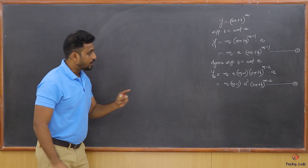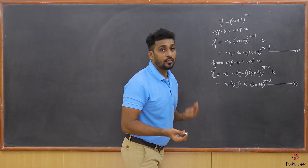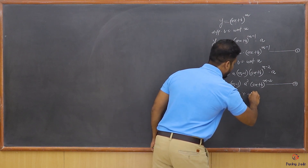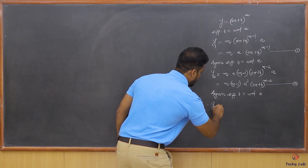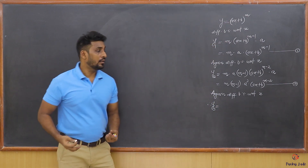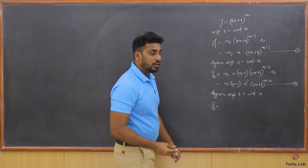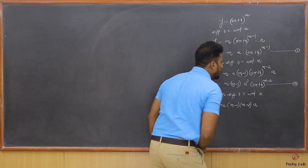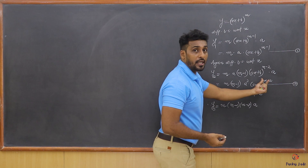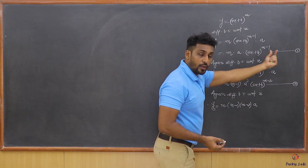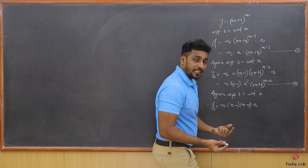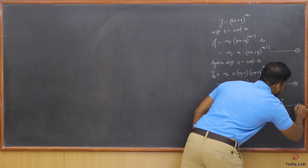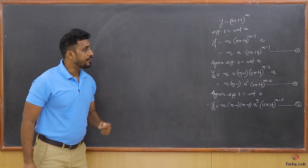Proceeding further to find y3, differentiate again. The (m-2) power comes down, so we get m·(m-1)·(m-2), the exponent reduces by one more, and multiplying again by the derivative of (ax + b) which is a, giving a³. So y3 = m·(m-1)·(m-2)·a³·(ax + b)^(m-3). This is the third equation.